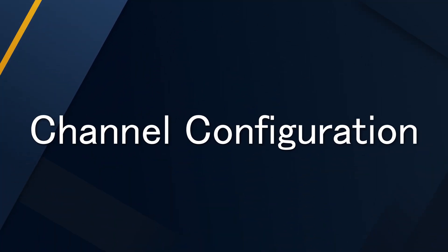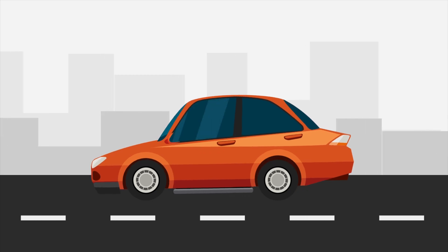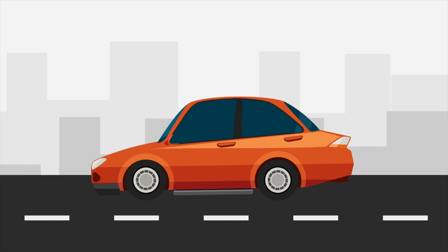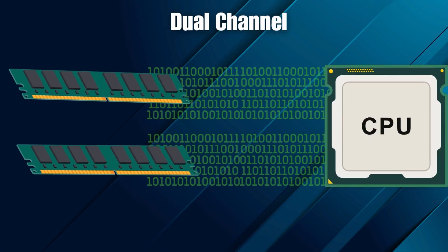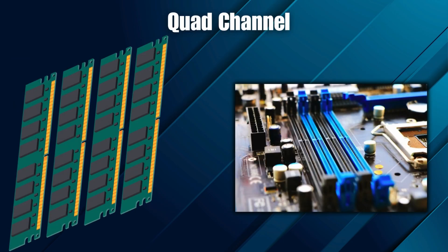Getting the right capacity and speed is only half the battle — how you install that RAM is just as critical. That brings us to channel configuration, something that is often overlooked. Think of your memory bus as a road. A single stick of RAM in single channel is like a one-lane road — it works, but traffic can back up. Most modern motherboards support dual-channel memory. By installing two matching sticks of RAM, you open up a second lane, letting the CPU access both sticks simultaneously, effectively doubling the bandwidth. This is why two 8GB sticks will always significantly outperform one 16GB stick. Even some high-end systems support quad-channel, but for 99% of users, dual-channel is the goal.